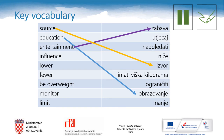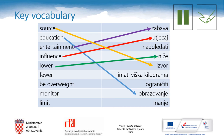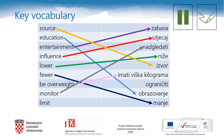Entertainment — zabava. Influence — utjecaj. Lower — niže. Fewer — manje. Be overweight — imati viška kilograma. Monitor — nadgledati. And finally, limit — granicid. That was excellent.